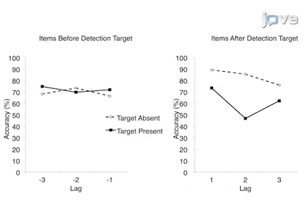Ultimately, this novel dual task procedure uses an attentional blink paradigm to show the temporal effects of attentional blink on non-target words. This method can help answer key questions in the cognitive neuroscience field, such as how attention affects both the temporal and spatial ability to process other stimuli or events in addition to the detection target.